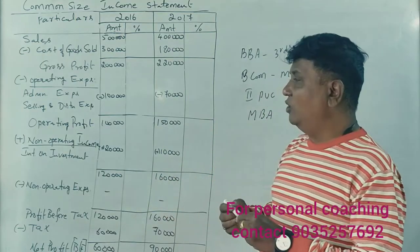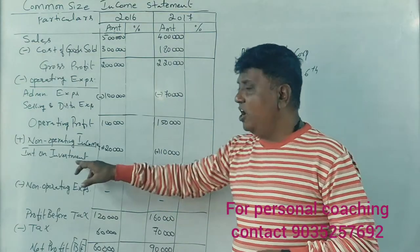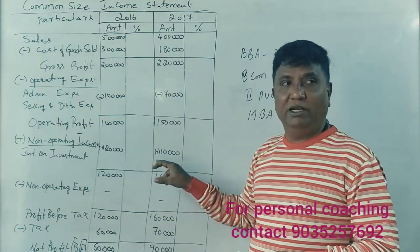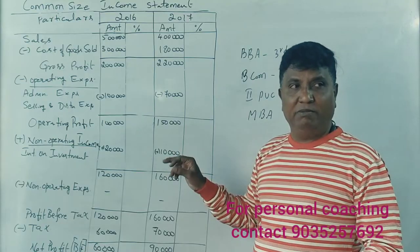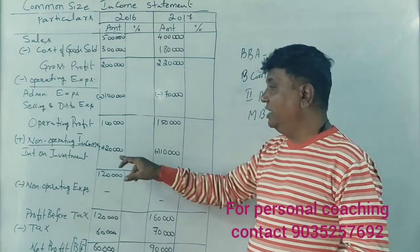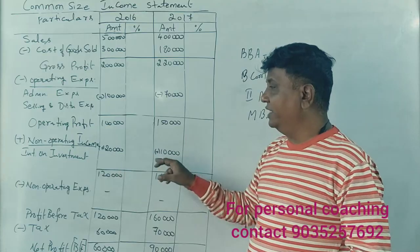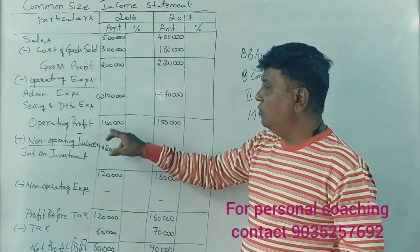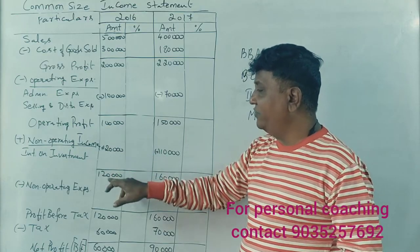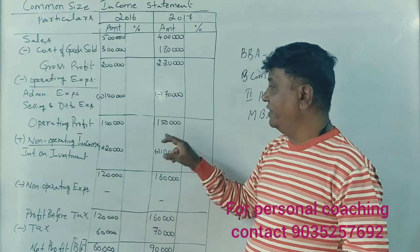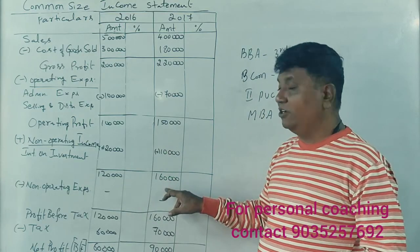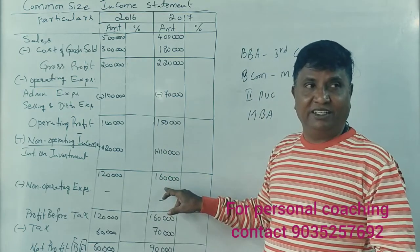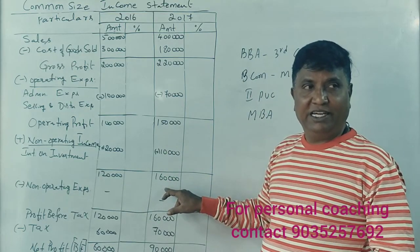Next, we move to non-operating income — we add this money. There is other income, which is a plus. In 2016, it is 1 lakh plus 20,000, giving 1 lakh 20,000. In 2017, 1 lakh 50,000 plus 10,000 equals 1 lakh 60,000.